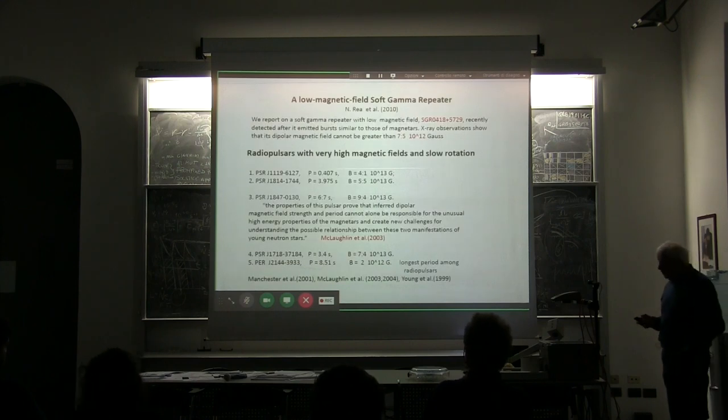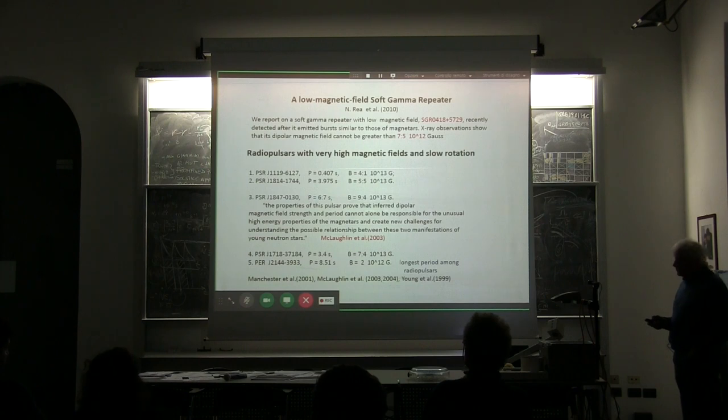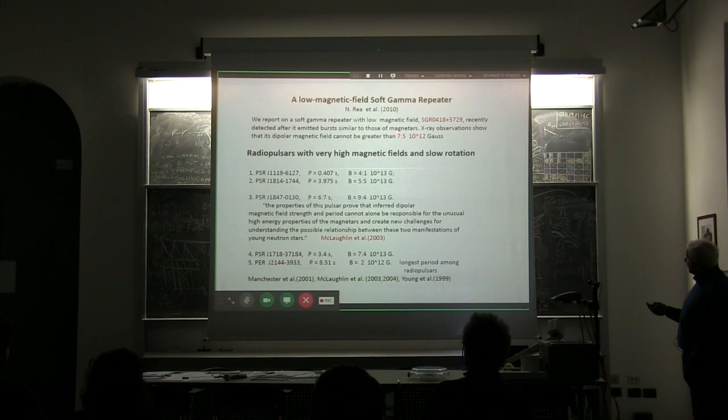Now, a few words about critics of Magnetar Model. First of all, there is one soft repeater which has low magnetic field. If you calculate magnetic field in the same way like all other ones, this soft repeater has magnetic field less than 10 to 12, which is quite normal. So it cannot give you effects of soft repeaters.